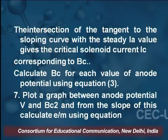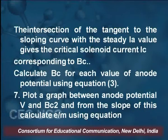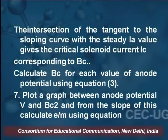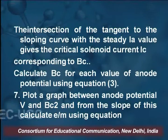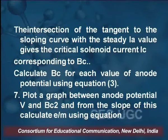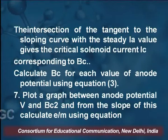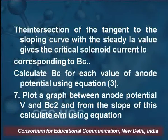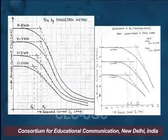We calculate Bc for each value of the anode potential using the previously defined equation. Then we plot a second graph of anode potential V (2 volt, 3 volt, 4 volt) versus Bc². From the slope of this V versus Bc² graph we can calculate the e/m ratio using the equation.